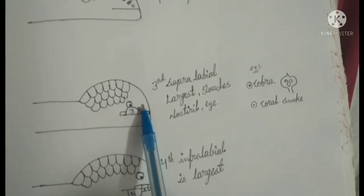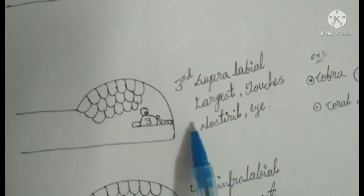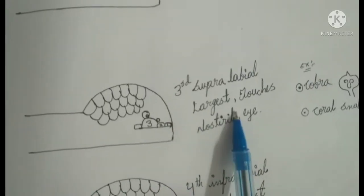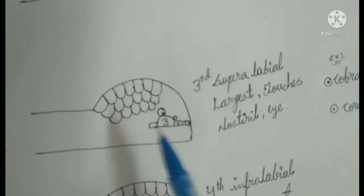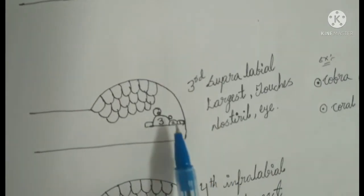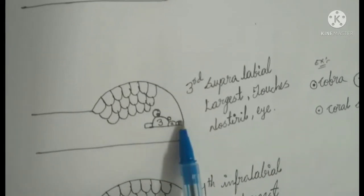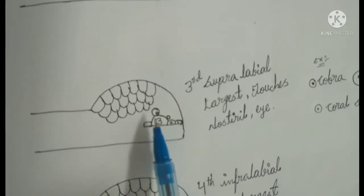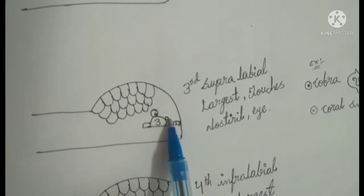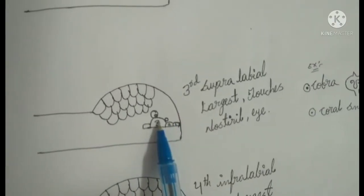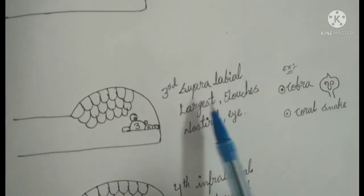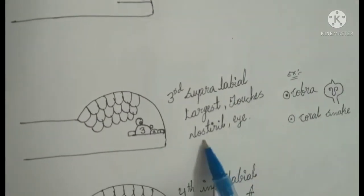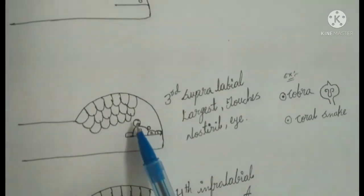We are using supralabial. We are using infralabial. We are using a small scale. We are using loreal pit, supralabial, 3 scales. We are using the continuous nostril touches. We are using poisonous snakes — cobra and coral snake. Third supralabial: largest, touches nostril and eye. This is a small scale, continuous and touches.